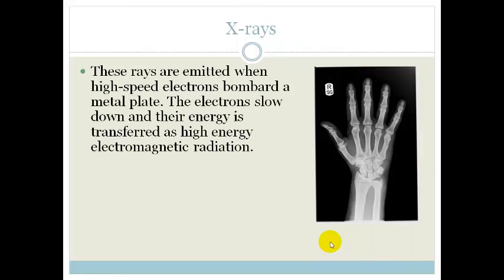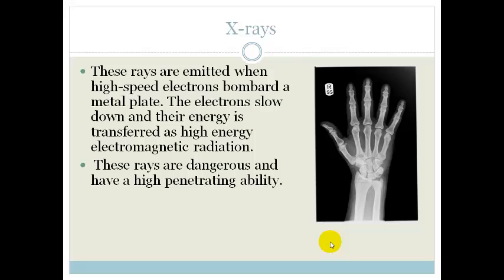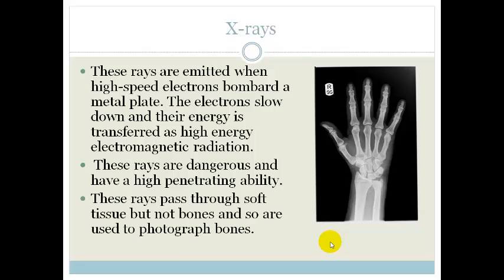Moving on to X-rays. X-rays are also pretty high energy. They are emitted when high-speed electrons are bombarded onto a metal plate. The electrons slow down and their energy is transferred to high-energy electromagnetic radiation. These rays are dangerous and have a high penetrating ability. They pass through soft tissue but not bones, and that's how we use them to photograph bones.